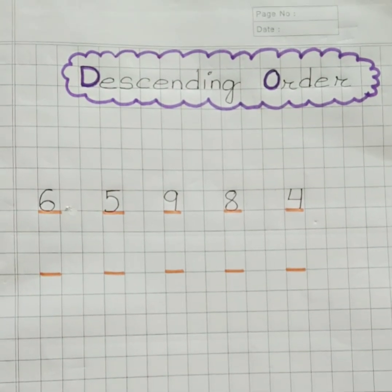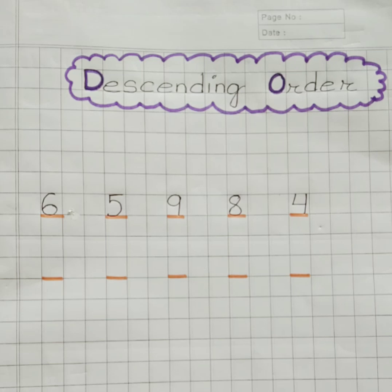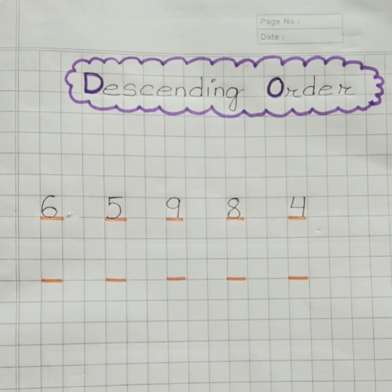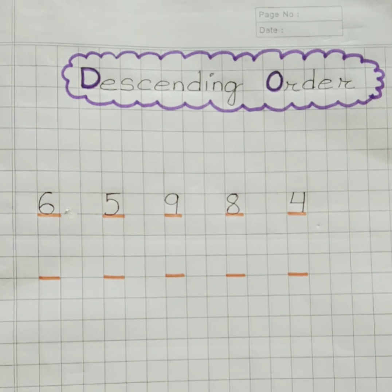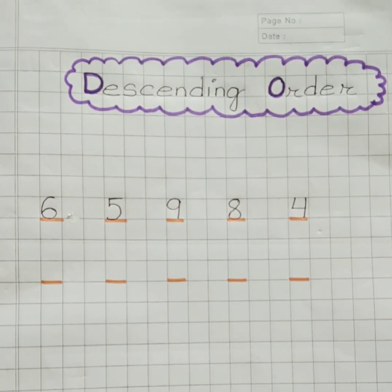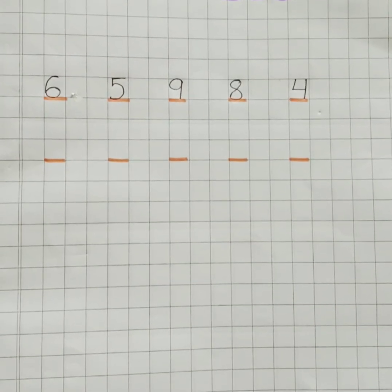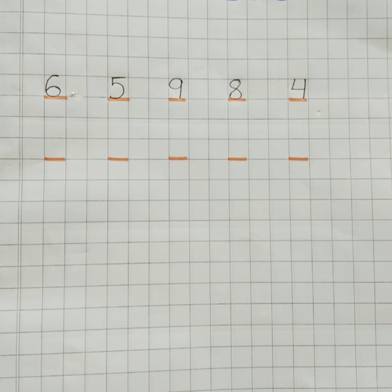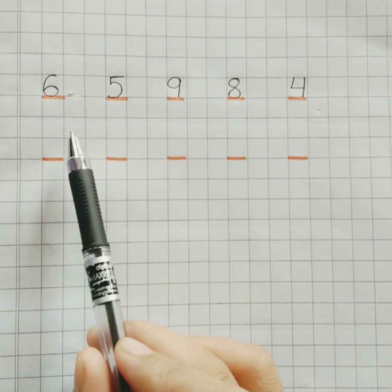We know that descending order means arrangement of numbers from the greatest to the smallest, and when we arrange the numbers in descending order, we start by placing the greatest or the biggest number first. So in this group, which number is the biggest?